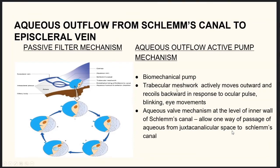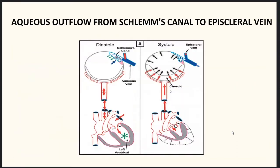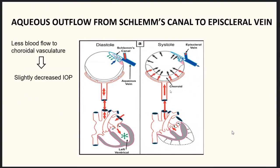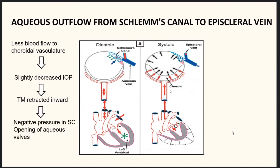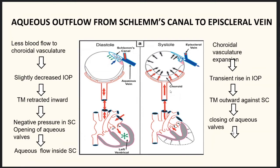The trabecular meshwork also acts as a biomechanical pump — it moves outward and recoils in response to ocular pulse, blinking, and eye movements. The aqueous valve mechanism is at the level of the inner wall of Schlemm's canal, allowing only unidirectional passage of aqueous from the juxtacanalicular space into Schlemm's canal. During diastole, decreased choroidal blood flow slightly decreases IOP, the trabecular meshwork retracts inward creating negative pressure in Schlemm's canal, opening the aqueous valves and allowing aqueous to flow in. During systole, choroidal vascular expansion increases IOP, distending the trabecular meshwork outward against Schlemm's canal, closing the aqueous valves and pushing aqueous through the collector channels and into episcleral veins.